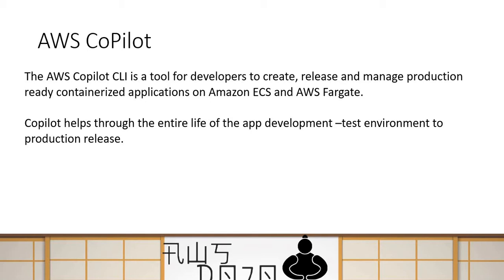Everything you do is through a CLI command, and it can really help you automate the entire lifecycle of your containerized application, as long as it is getting deployed to ECS and Fargate. At the time of this video, this supports deployment to Amazon ECS and Fargate.